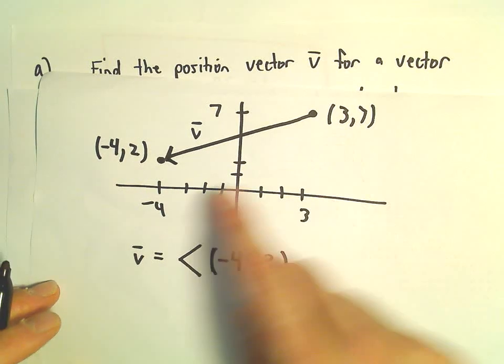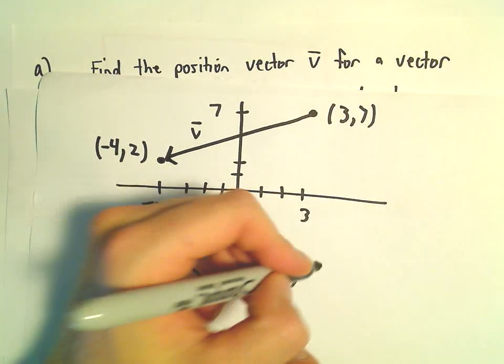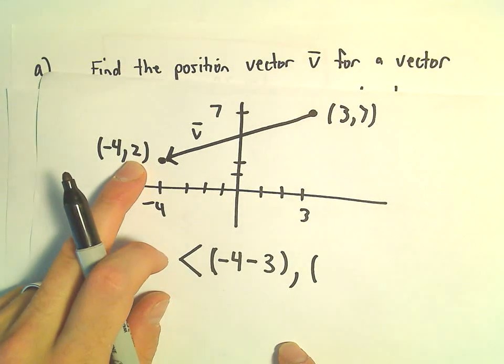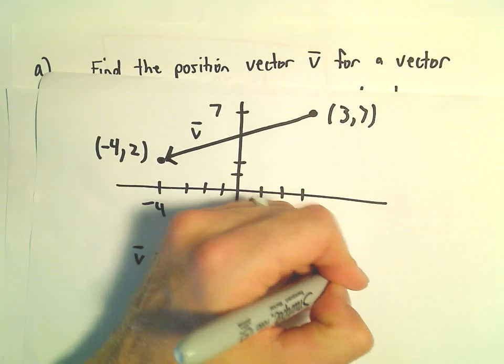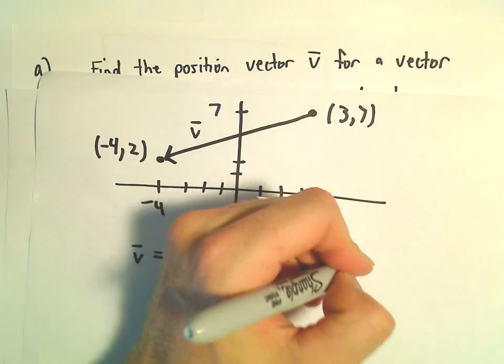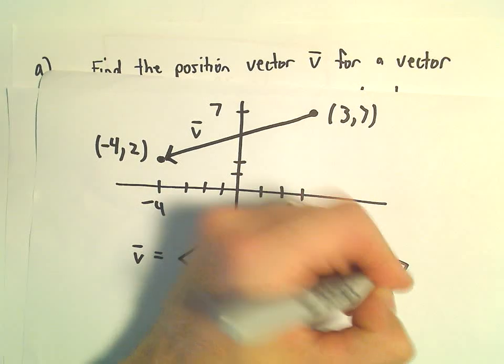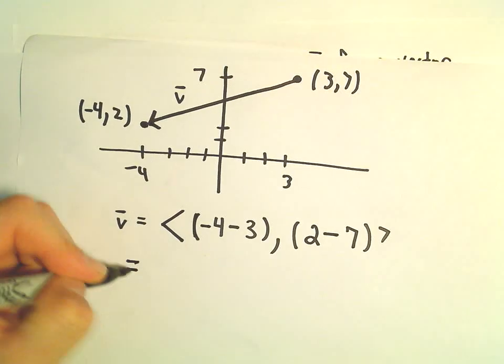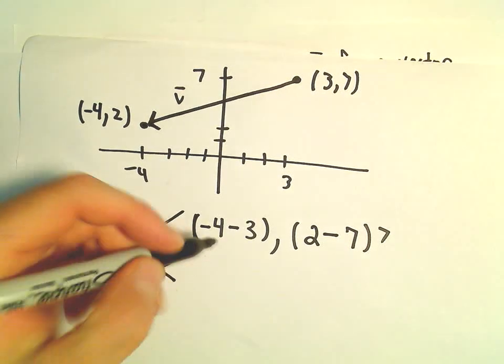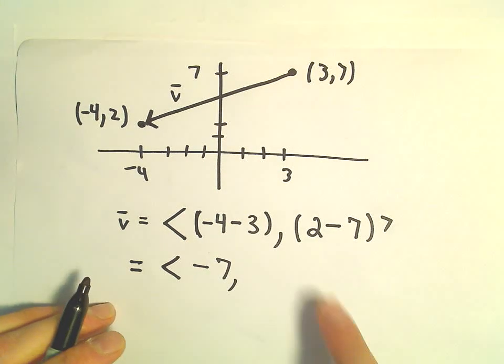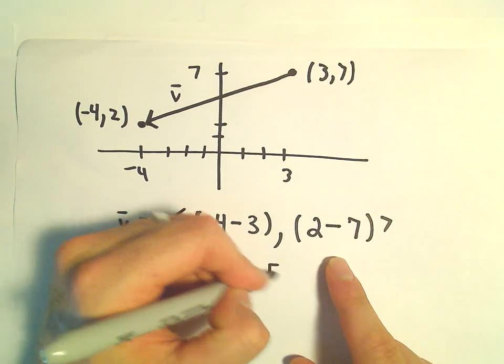And then we do the same thing for the y-coordinates. So we stopped at the y-coordinate of 2, and we started at the y-coordinate of 7. And that's now going to be our position vector. So -4 minus 3, that's -7. 2 minus 7, that's going to be -5.